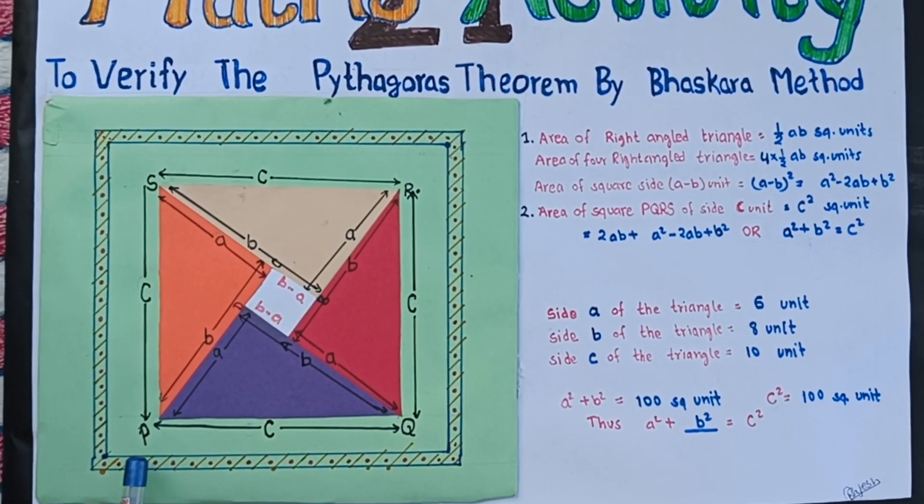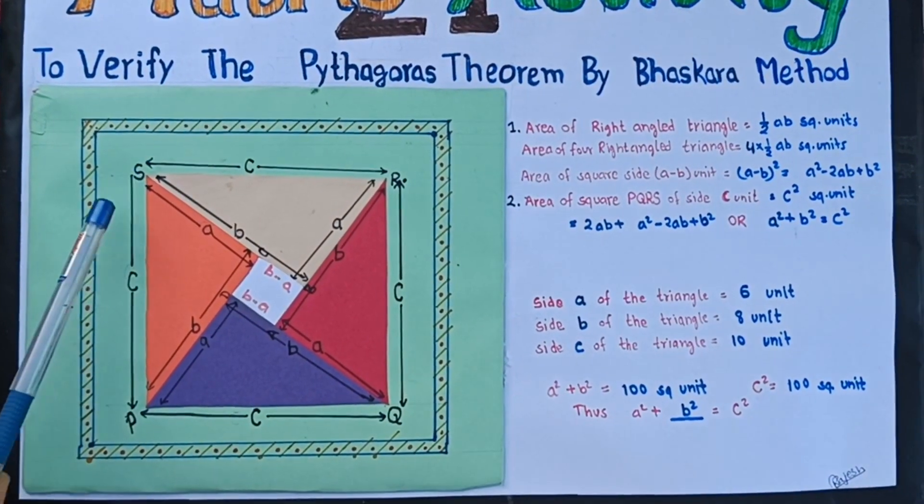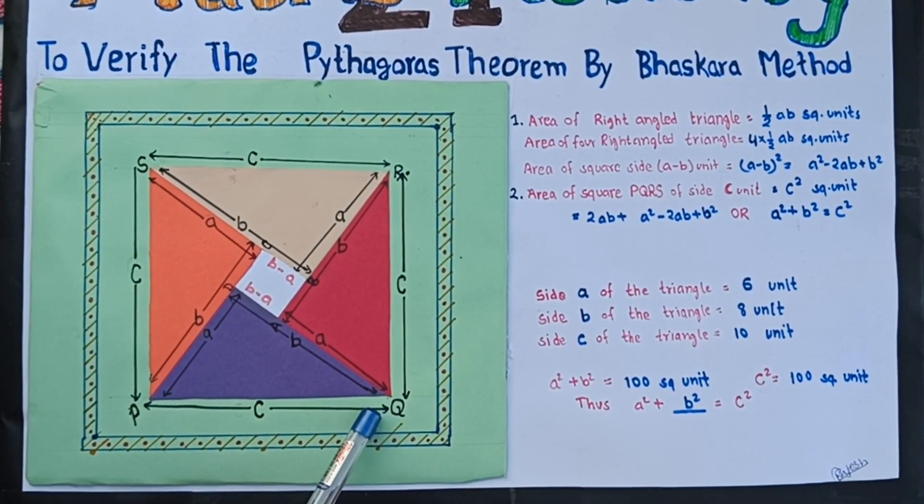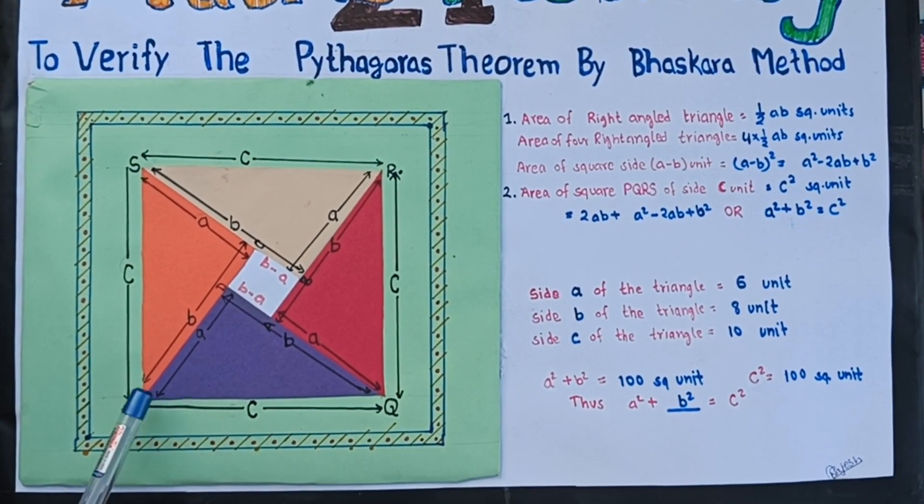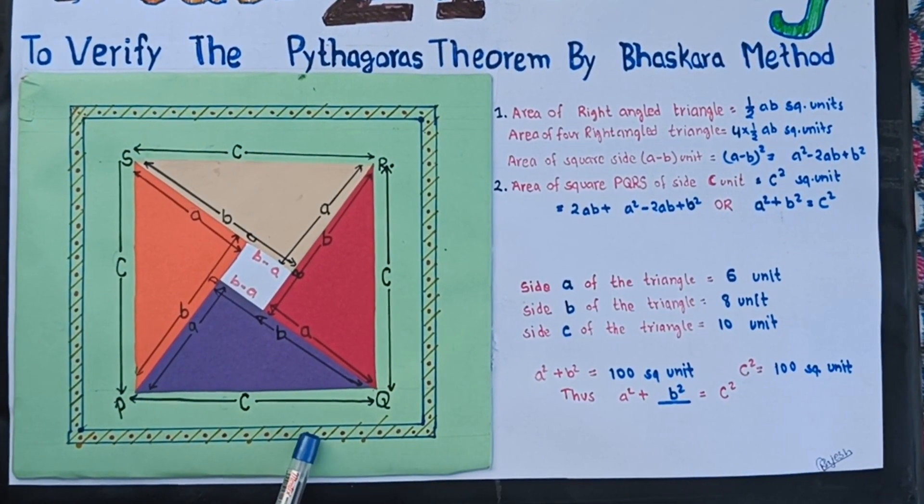We find the area of square PQRS in two ways. First, the area of this square is side times side, which means C times C equals C square.